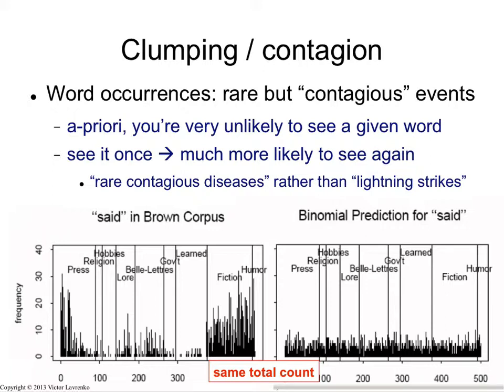For example, once I have aardvark in this lecture, I am much more likely to hear aardvark again in the lecture, even though a priori this is a very, very infrequent word. So if you're looking for an analogy of word occurrence — they are infrequent, they're rare events, but they are not like lightning strikes. Rare contagious diseases are another rare event. So words are a lot more like a contagious disease. Once you have a single occurrence in a certain area, in a certain document, you're much more likely to have subsequent occurrences of the same word.